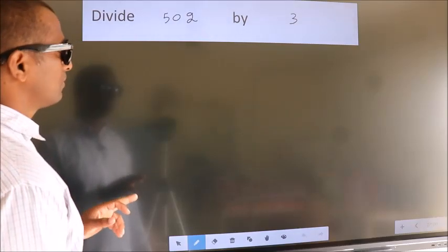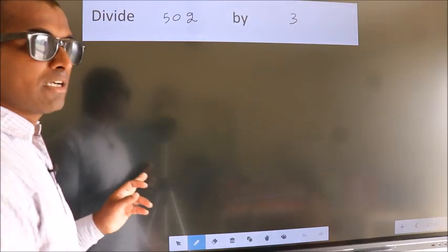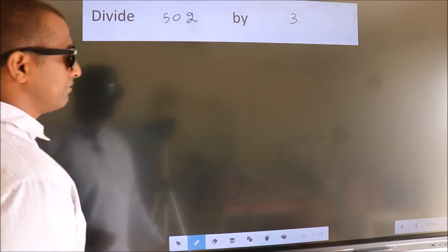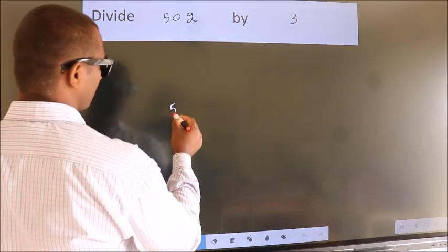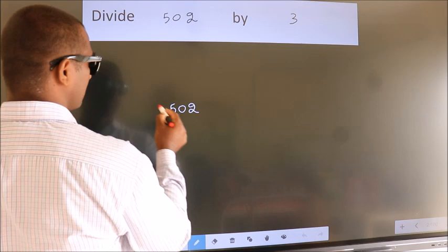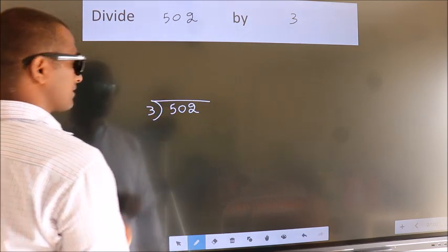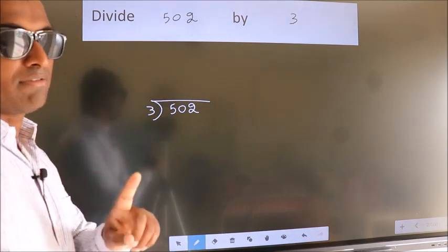Divide 502 by 3. To do this division, we should frame it in this way. 502 here, 3 here. This is your step 1.